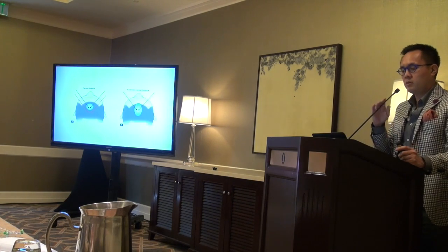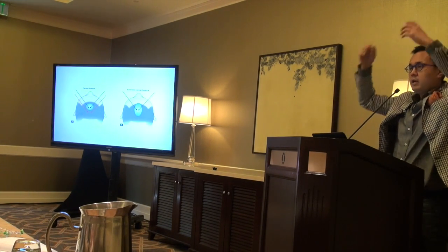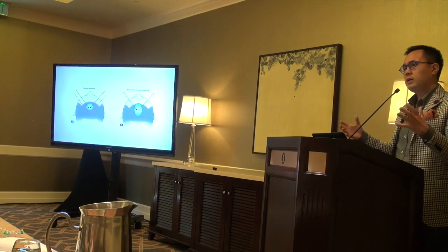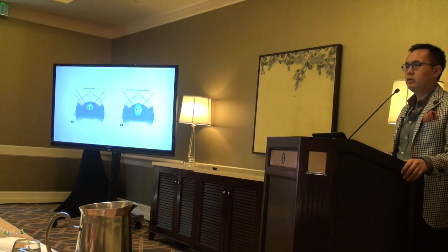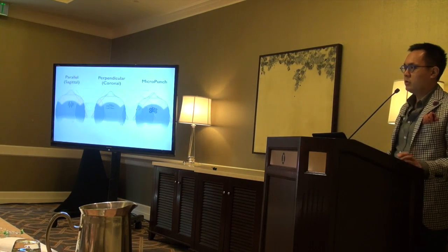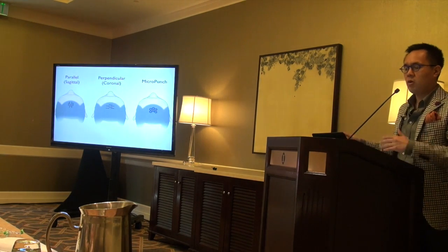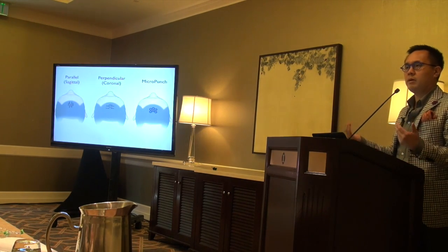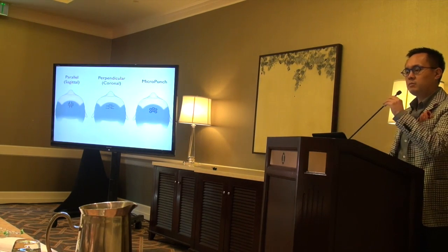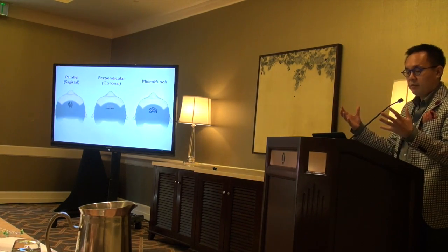We want to create density gradients that really impact the patient well. The central forelock, or the extended central forelock, can often be a very powerful area to fill with higher, stronger grafts at greater density and larger size, because when that area looks thin, the patient looks bald. That's an area you should think about in terms of design work. There are different ways to make recipient sites, and I've gone through all of them. Now I pretty much mix parallel and perpendicular sites.